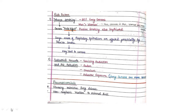In our previous video on lung pathology we discussed cancer in detail. Now in this video we are going to start with pneumoconiosis. This is a lung disease produced by organic and inorganic particulates and chemical fumes and vapors. It is an example of fibrosing restrictive lung disease — there will be fibrosis.